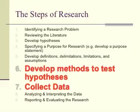As a reminder, where are we in the nine steps of research? We've already done steps one through five. We have identified our research problem, been reviewing the literature — which is an ongoing process — developed our hypotheses, specified a purpose, developed a purpose statement and research questions, and developed operational definitions, delimitations, limitations, and assumptions. Now we're at step six: developing our methods to test our hypothesis, or to answer our research question.